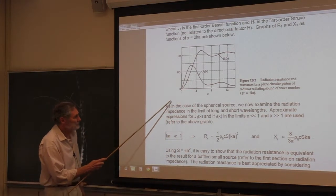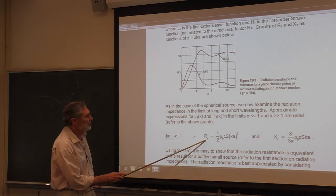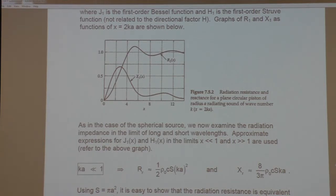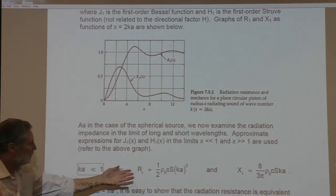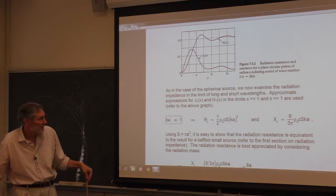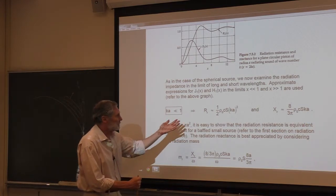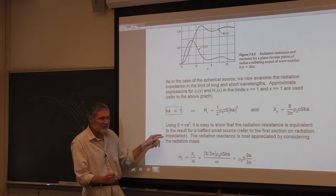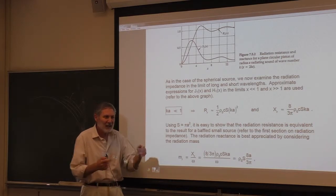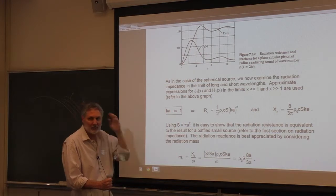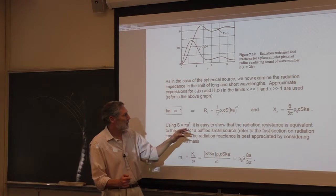The low-frequency behavior: radiation resistance goes like (ka)² and radiation reactance goes like ka. Once again we see that for small ka, a small source is a poor radiator — the radiation resistance is small. This is consistent with everything we've seen before; it must be true for a small source. The radiation resistance in this limit is identical to what we found previously for a small monopole source.